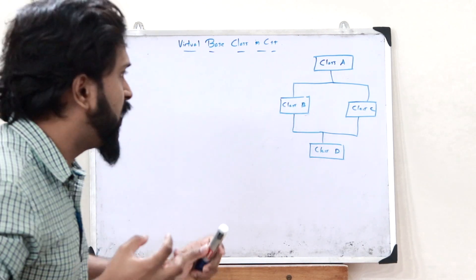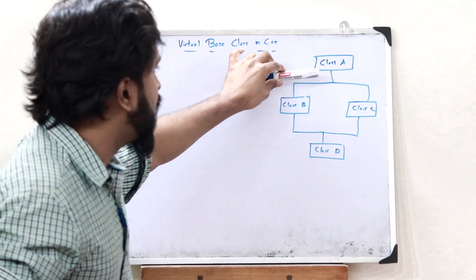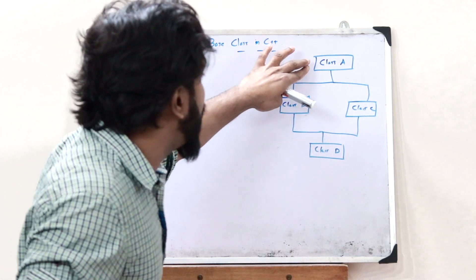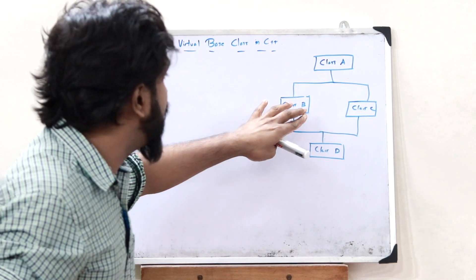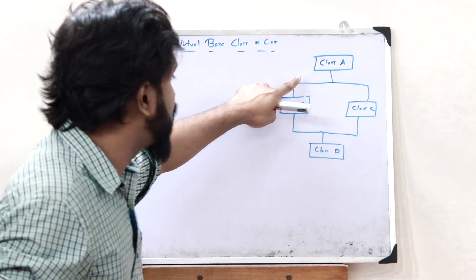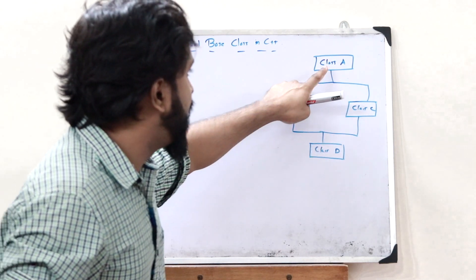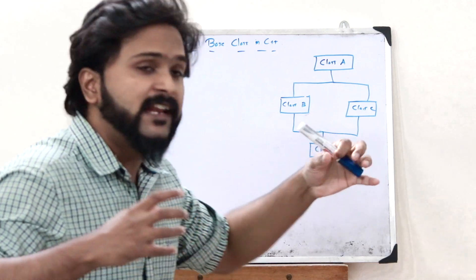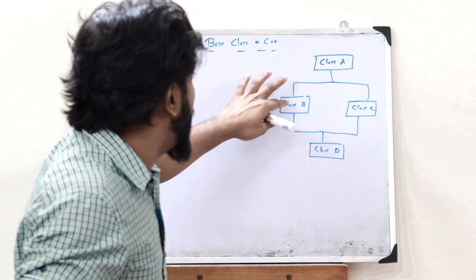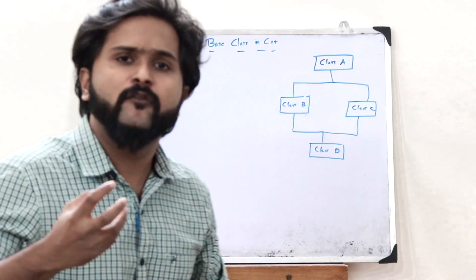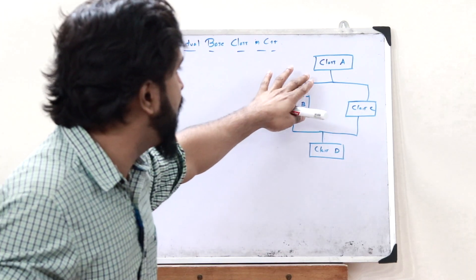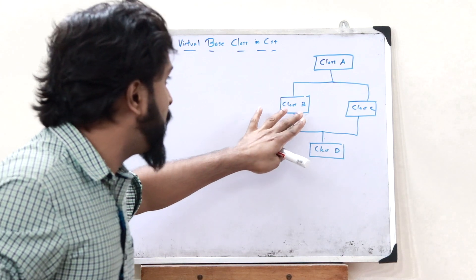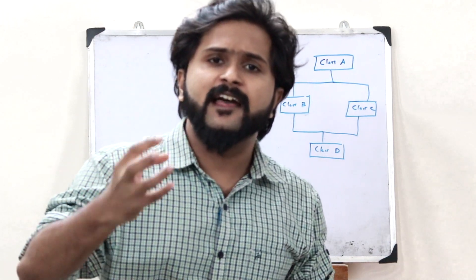What we observe here is that the data members and member functions of class A will go to class B and class C. And since class D is derived from both these classes, the data members and member functions of class A will be inherited onto class D both through class B and through class C. So when we try to access a data member or member function of class A through an object of class D, we will be given an error because of this ambiguity.